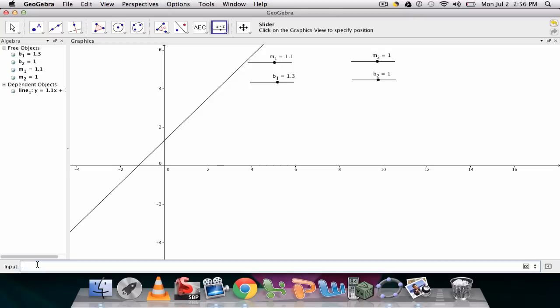I can do the same thing now to create a second line. So line underscore 2, colon, and then the same thing. y equals m underscore 2, space x, plus b underscore 2. So I'm just entering my lines in y equals mx plus b format.